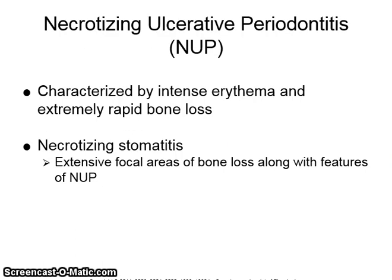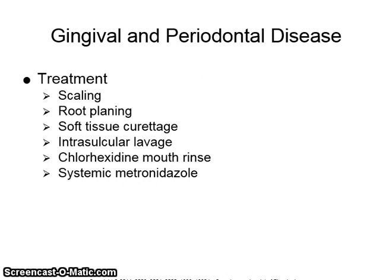NUP is characterized by intense erythema and extremely rapid bone loss. Necrotizing stomatitis involves extensive focal areas of bone loss along with features of NUP. Treatment for gingival and periodontal diseases includes scaling, root planing, soft tissue curettage, intrasulcular lavage, chlorhexidine mouth rinse, and systemic metronidazole.